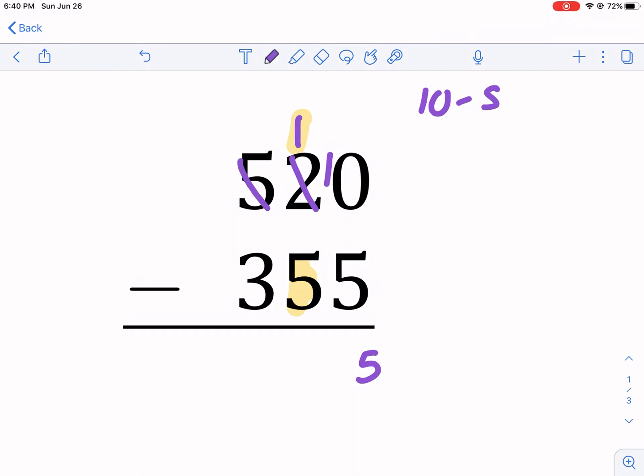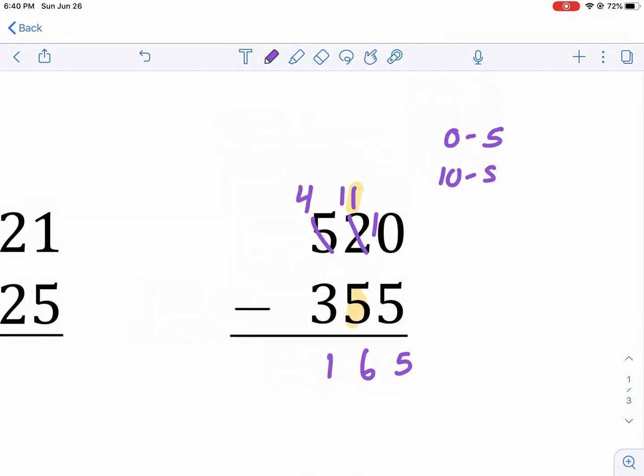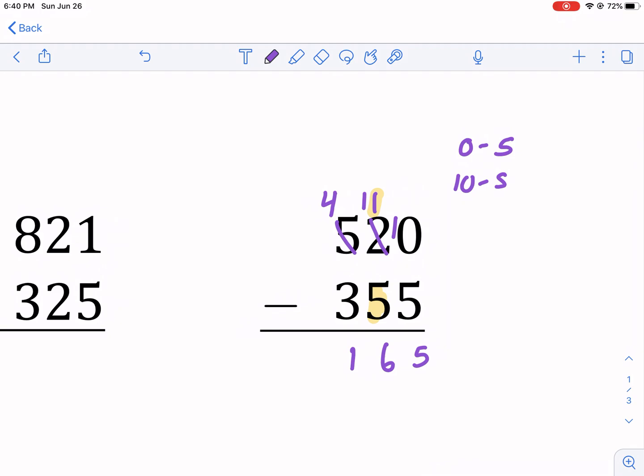So we need to borrow again and turn that into a 4. And then we're going to change this to an 11. We need to move that over. Now we have 11 minus 5, which is 6. 4 minus 3 is 1. So 165 is our answer.